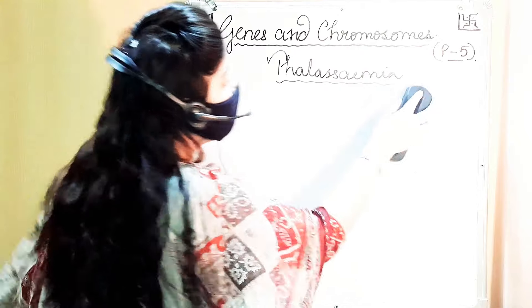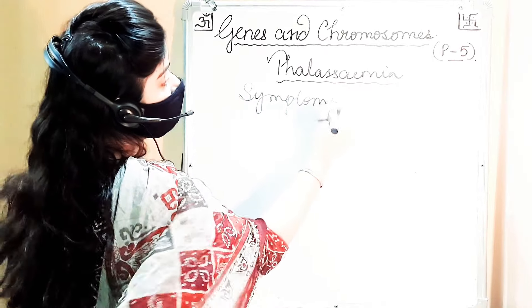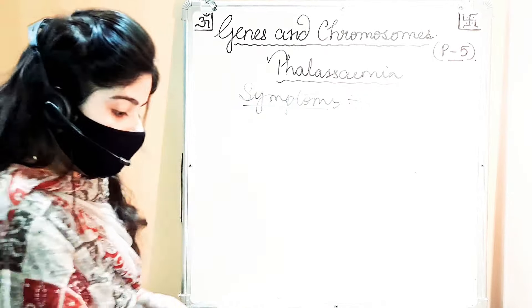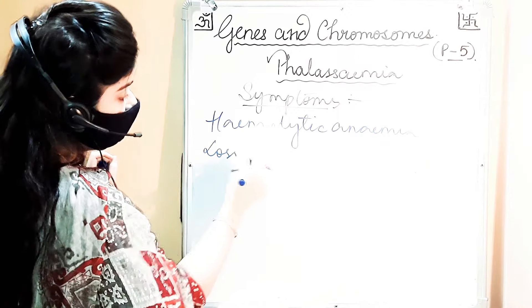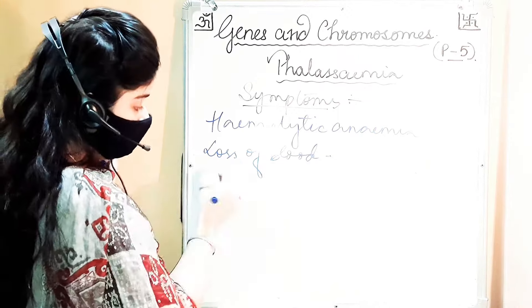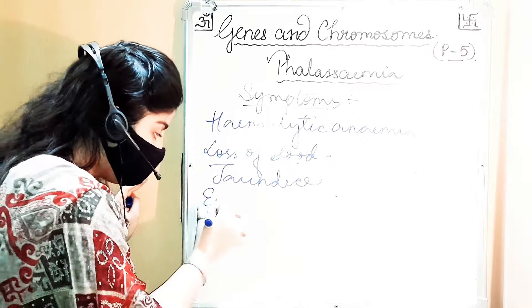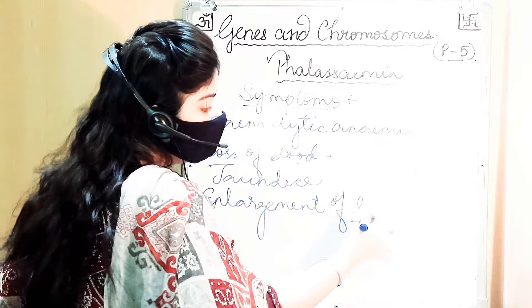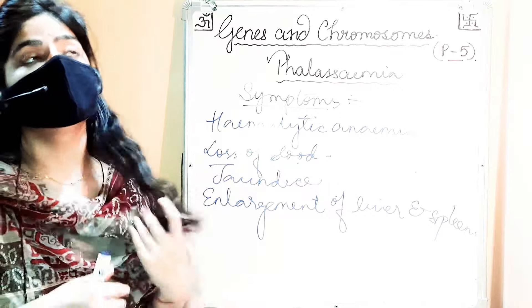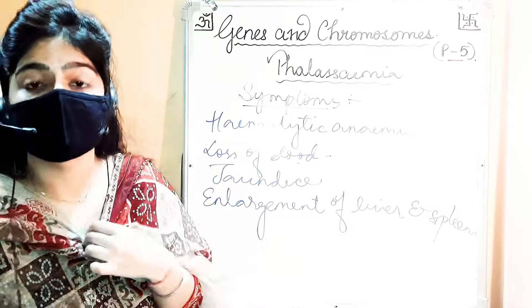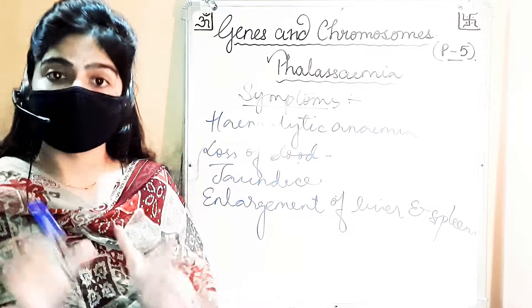The symptoms of thalassemia include hemolytic anemia and loss of blood. It can also cause jaundice and enlargement of the liver and spleen. This disease is very fatal and cannot be cured permanently. The treatment method is regular blood transfusion, which is not a permanent cure.